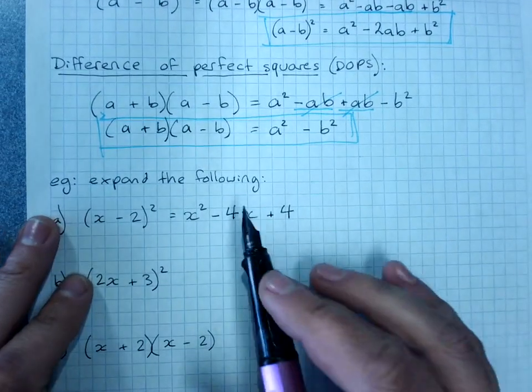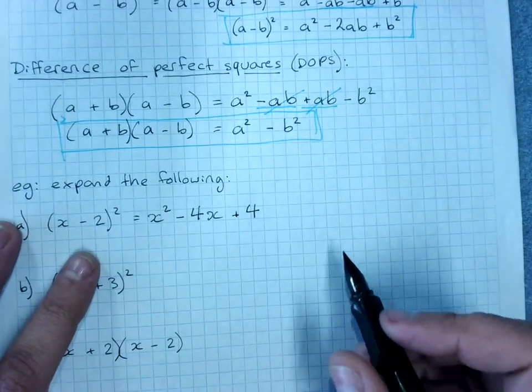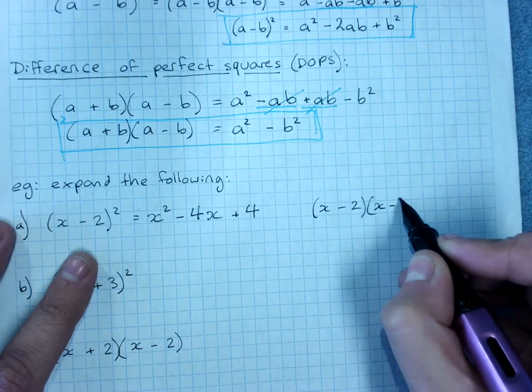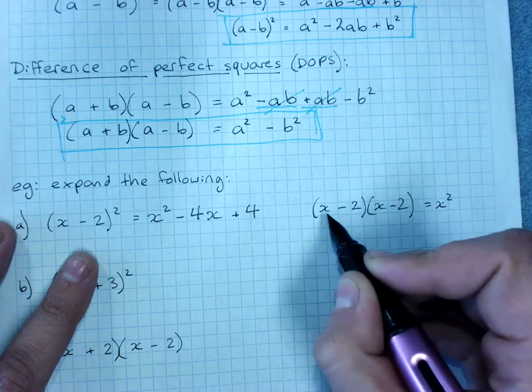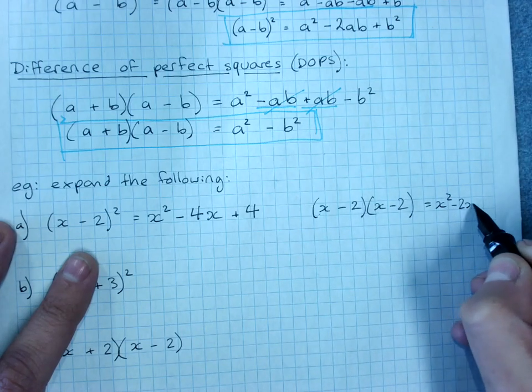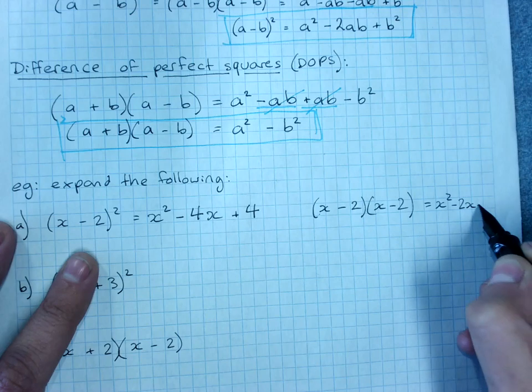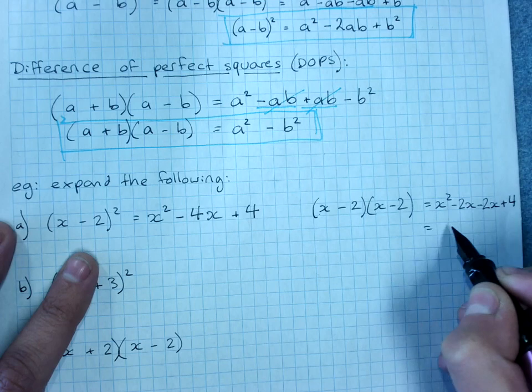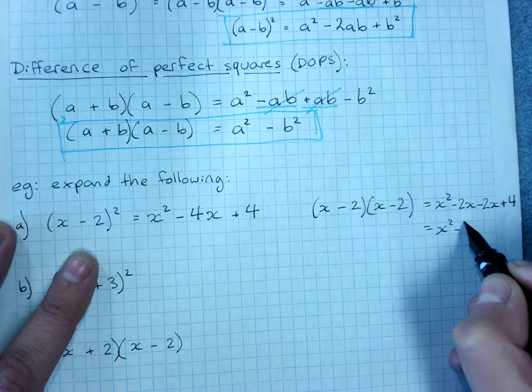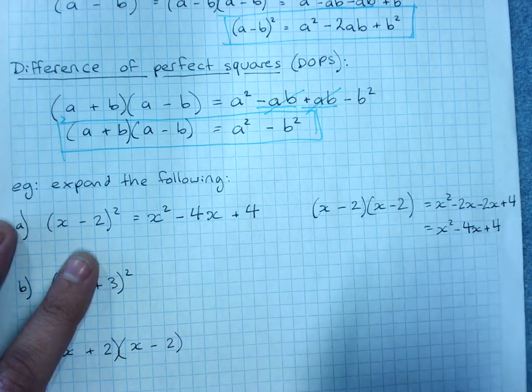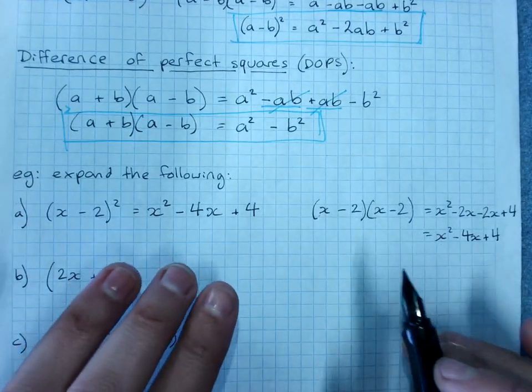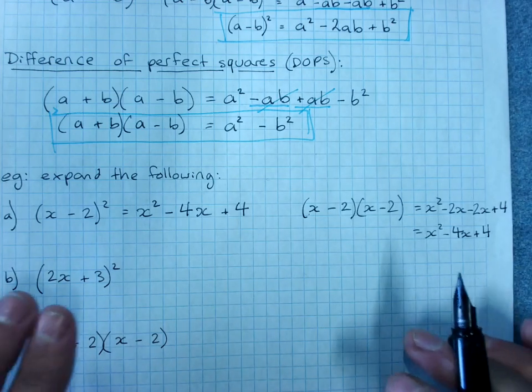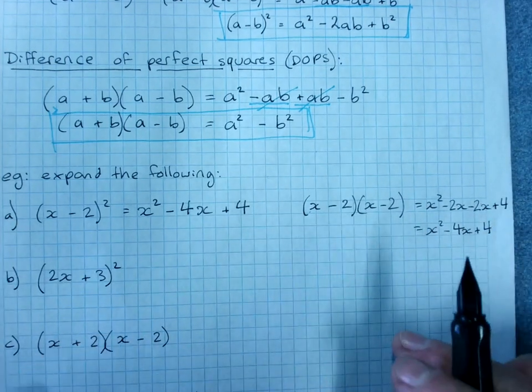If you're not sure on that, do it again by expanding. (x-2)(x-2). x times x is x², x times negative 2, negative 2x, negative 2 times x, take away another 2x, negative 2 times negative 2, plus 4. I get x² - 4x + 4. Same answer either way. I don't mind which method you use. I do mind if you get it wrong. If you're not sure, use this method, you're less likely to get it wrong.